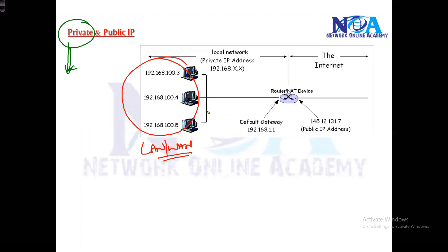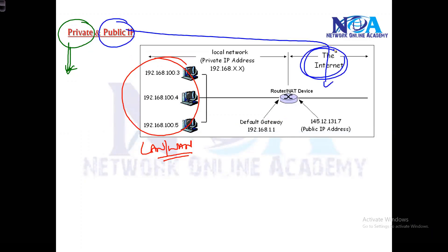Whereas the public IPs are those which you can use on the internet. So if you want to go to the internet, you need a registered public IP. But if you want to use any addresses within your company network, whether it is a LAN or WAN, as long as they are not connecting to internet, we call them private IP addresses.